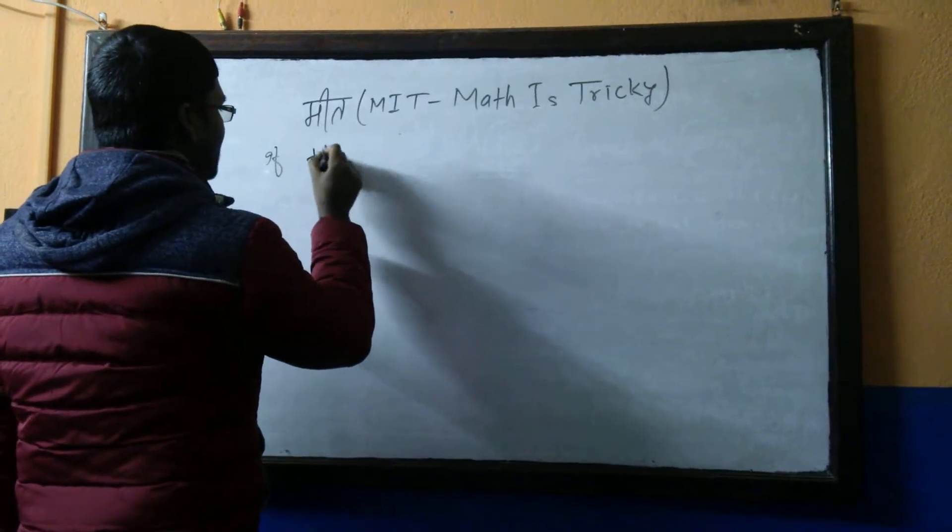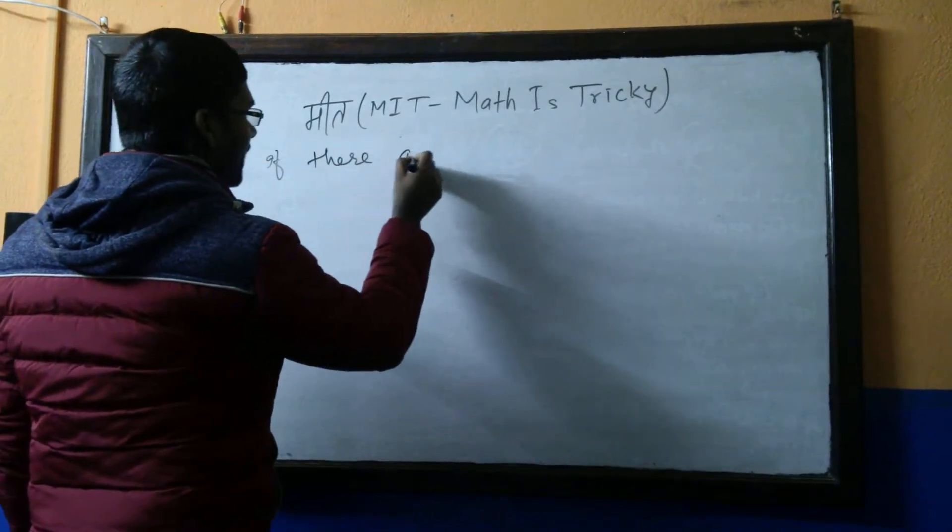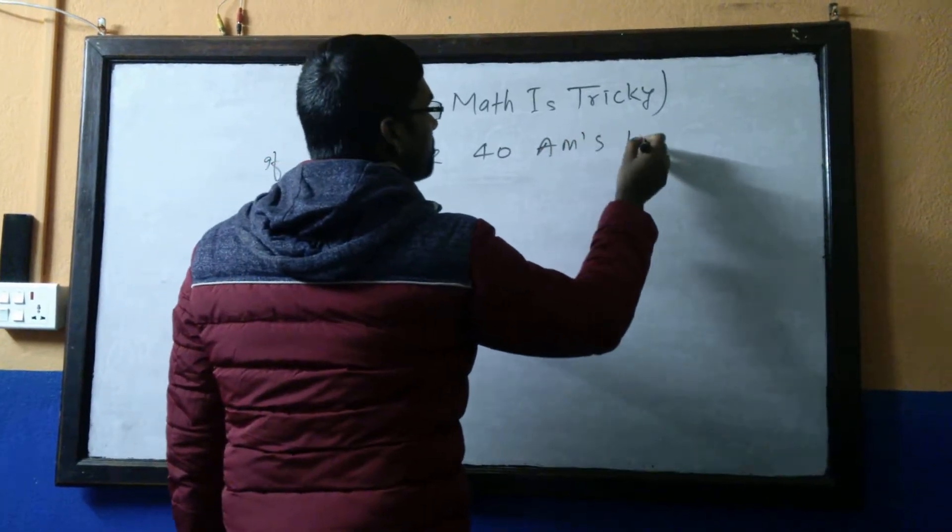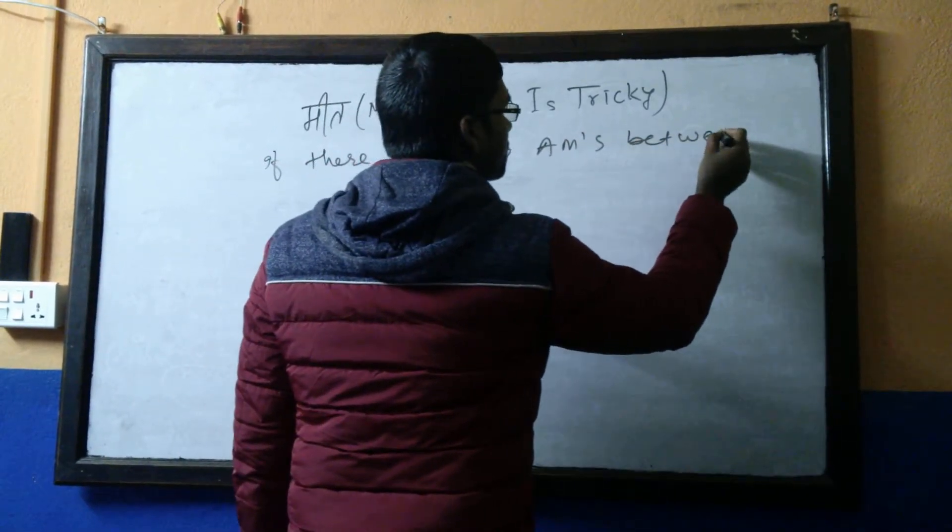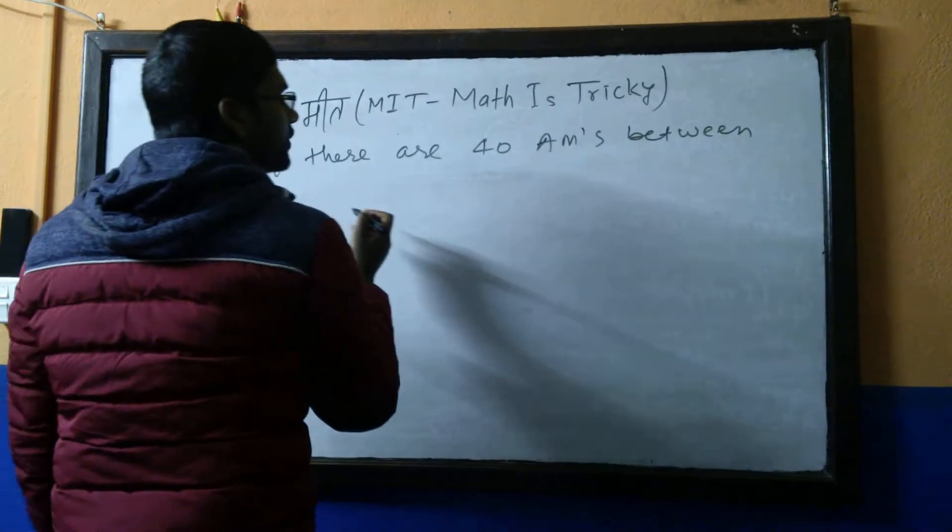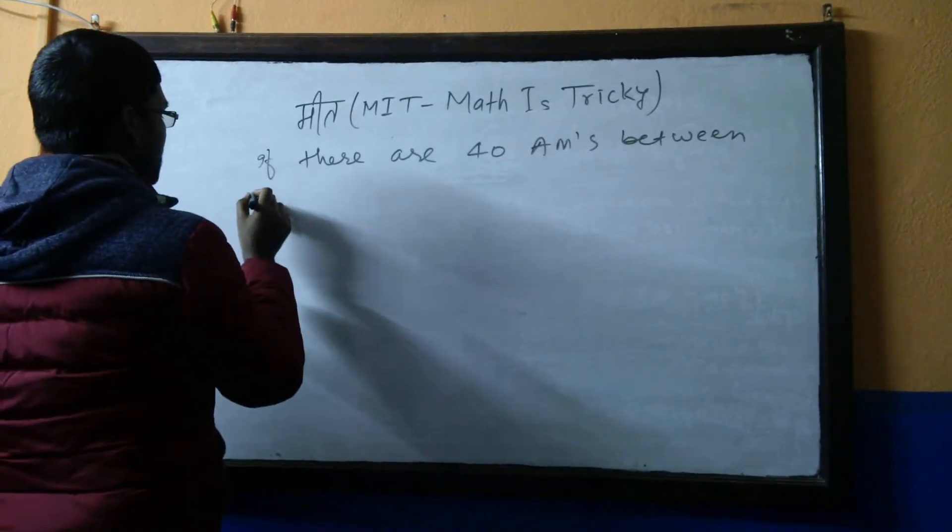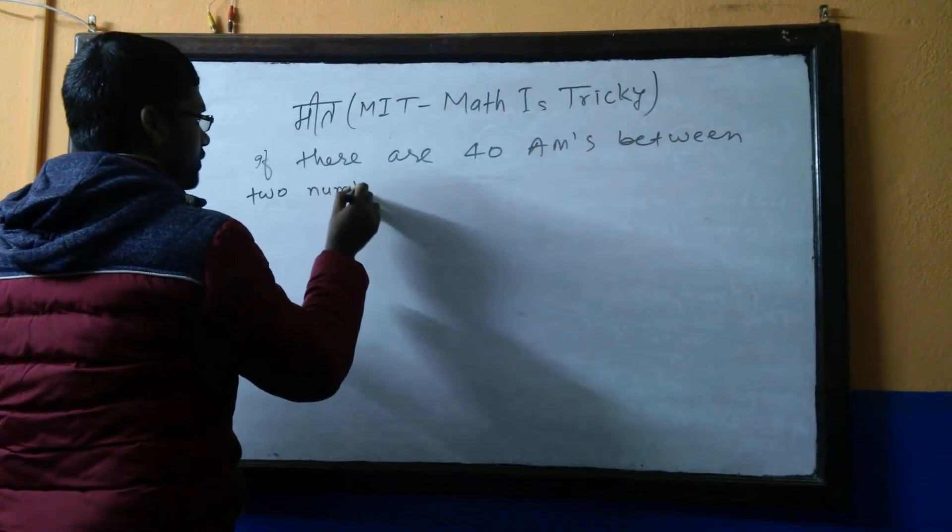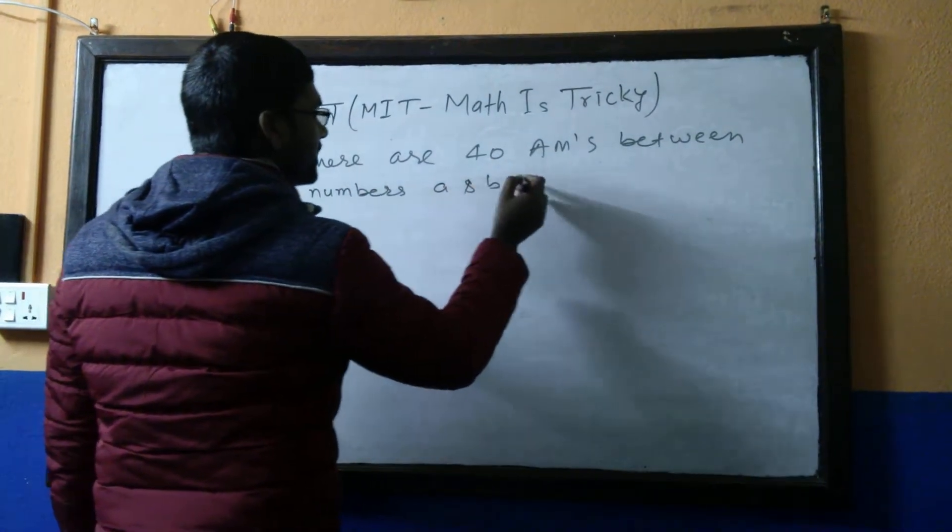There are 40 AMs between two numbers A and B, then...